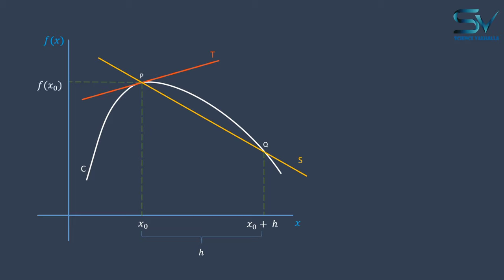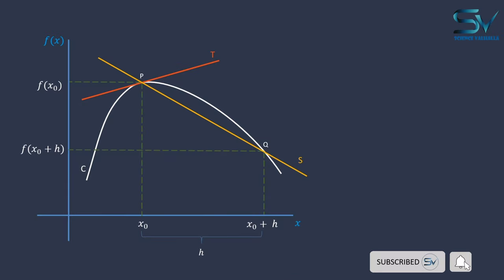The function's value at point p is f of x0. And at point q, f of x0 plus h. We now have two lines. The tangent line is one, and the secant line is another.